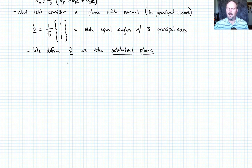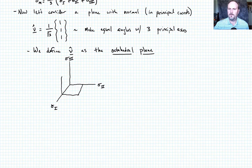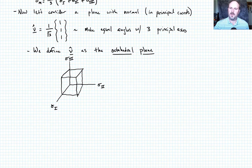If I draw this in stress space with the three principal stress directions sigma 1, sigma 2, and sigma 3, and sketch a cube, the octahedral plane is the plane that cuts across the corner of that cube — making equal angles with all three axes. That plane is the octahedral plane.